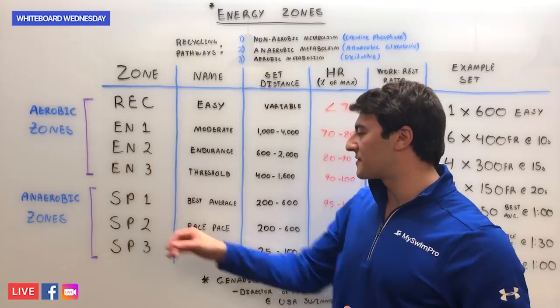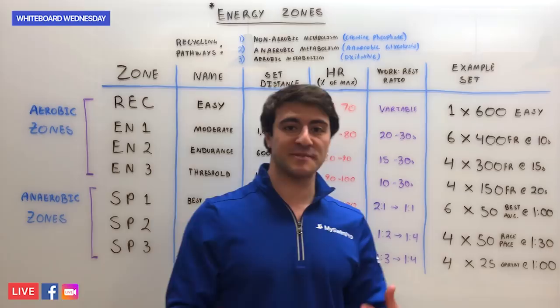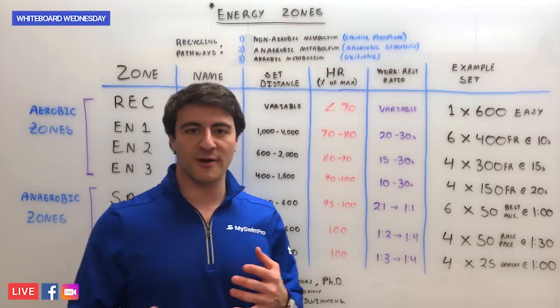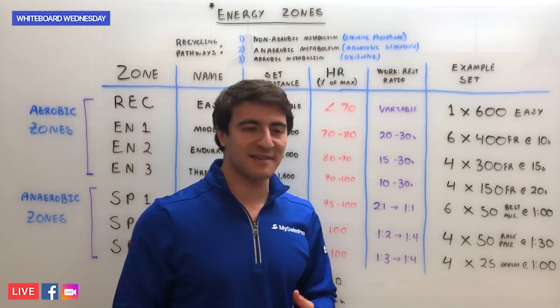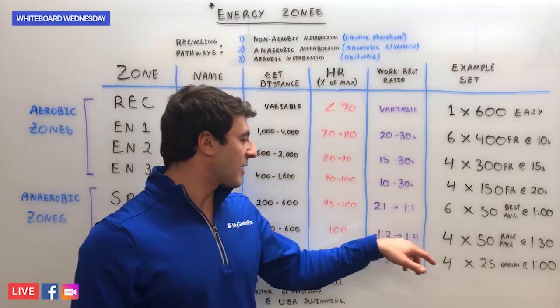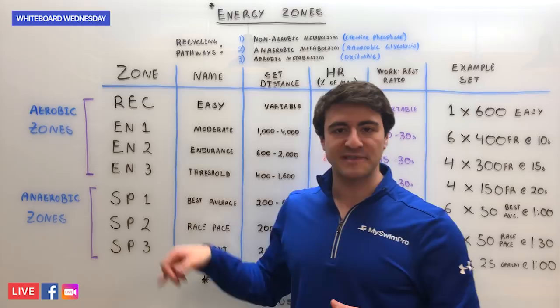SP2 is referred to as Race Pace. This is where you're really trying to max out your body in terms of speed and intensity, pushing 100% heart rate. Work-to-rest ratio is anywhere from one-to-two to one-to-four. An example set might be four 50s race pace on the 1:30, so if your goal is to go under 30 seconds your work-to-rest ratio would be one-to-three, and you're really trying to push yourself to achieve race pace performance.